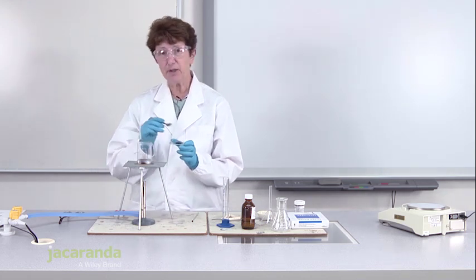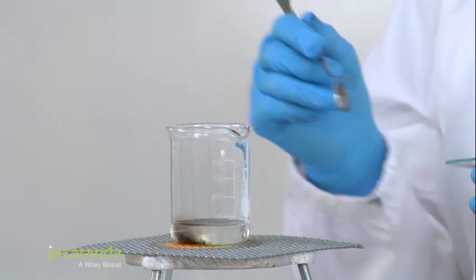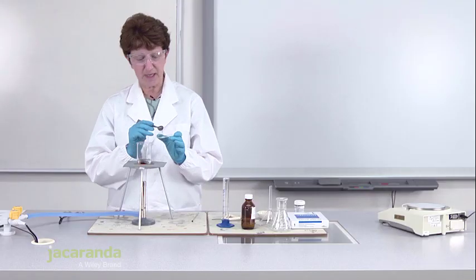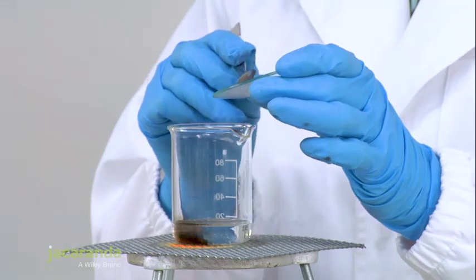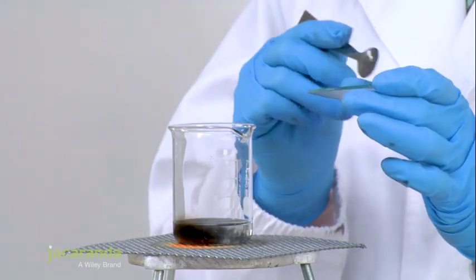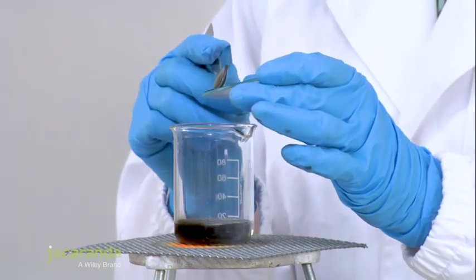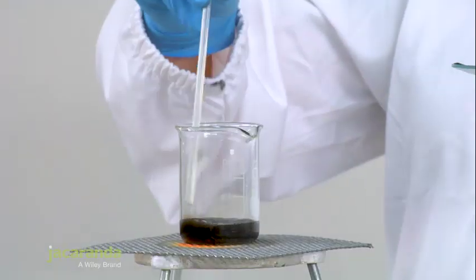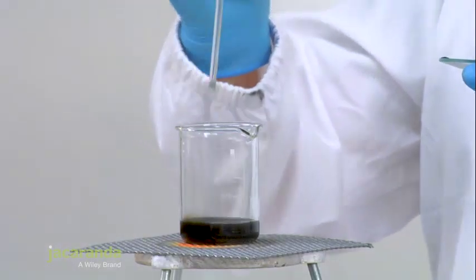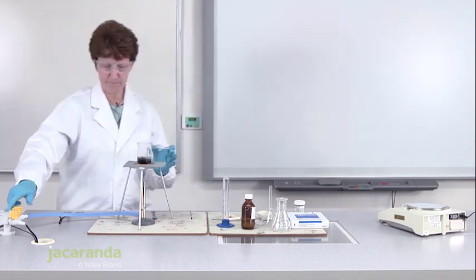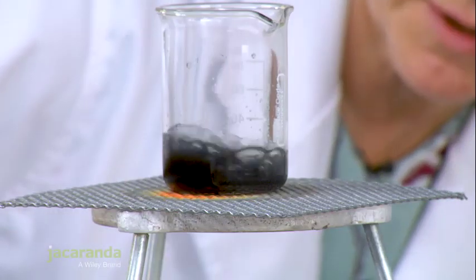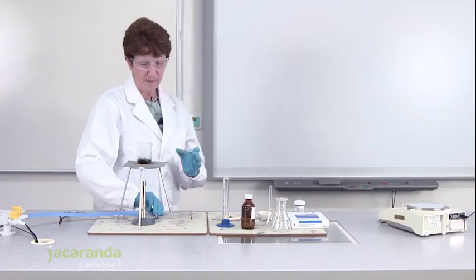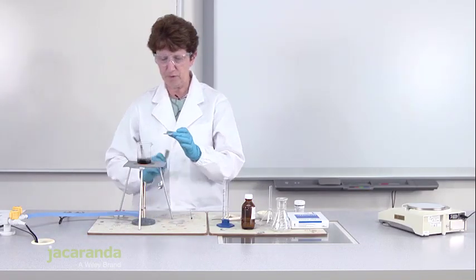You only need to add a little bit at a time and then stir it to make sure it all fully mixes and all fully reacts. I'm going to start adding a little bit at a time and stir it up. That's a bit too fast, so I'm going to lower the flame and continue to add my copper oxide.